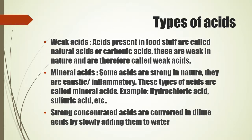Acids that we have in our food are called natural acids or carbonic acids. These acids, being weak in nature, are called weak acids. Some acids are strong in nature. The acids that we eat are very weak — that's why it is easy for us to digest and they do not harm any system of the body. Whereas if you handle strong acids, you may get injured — they may burn. Some acids are strong in nature; they are caustic and inflammatory.